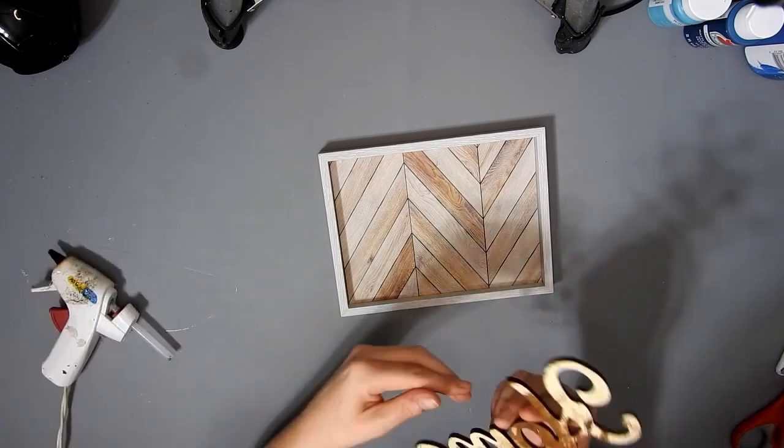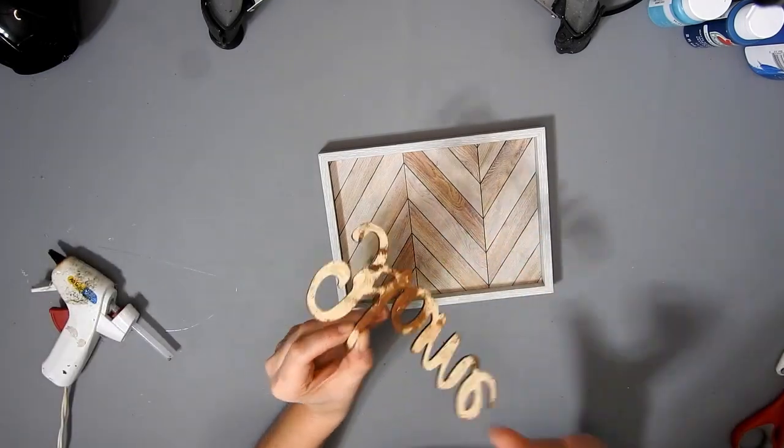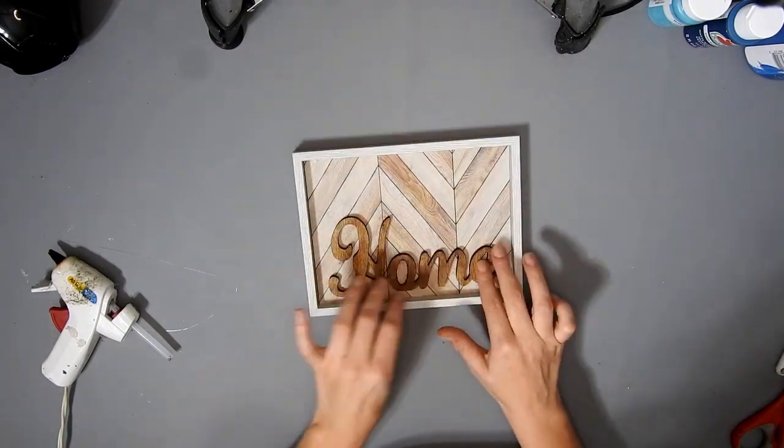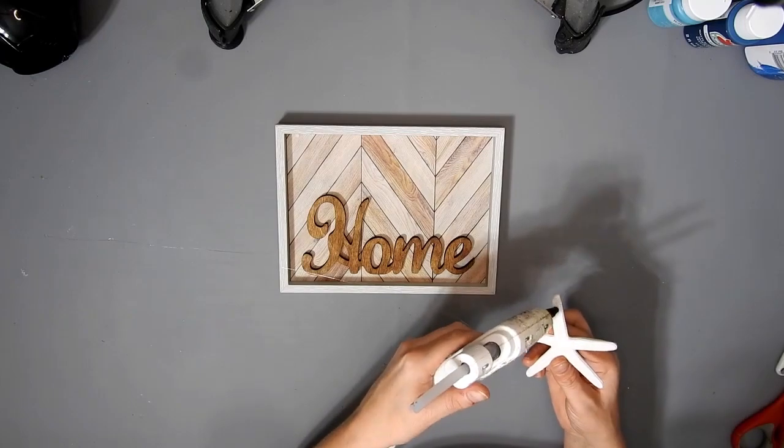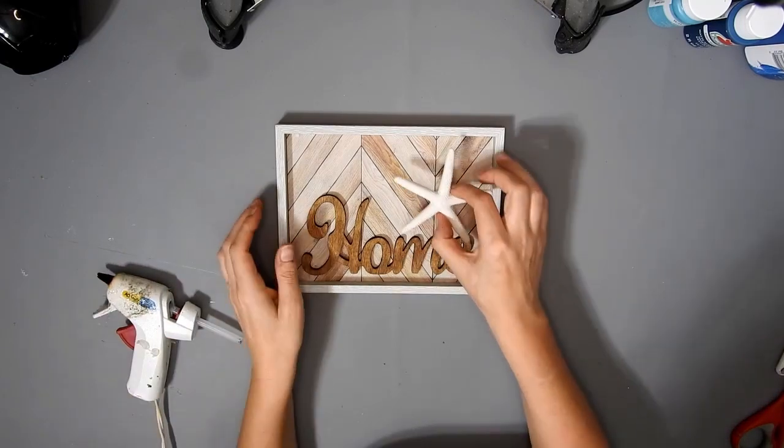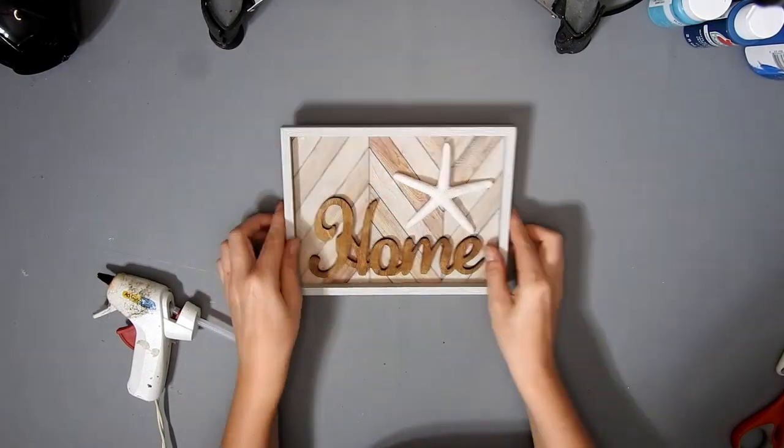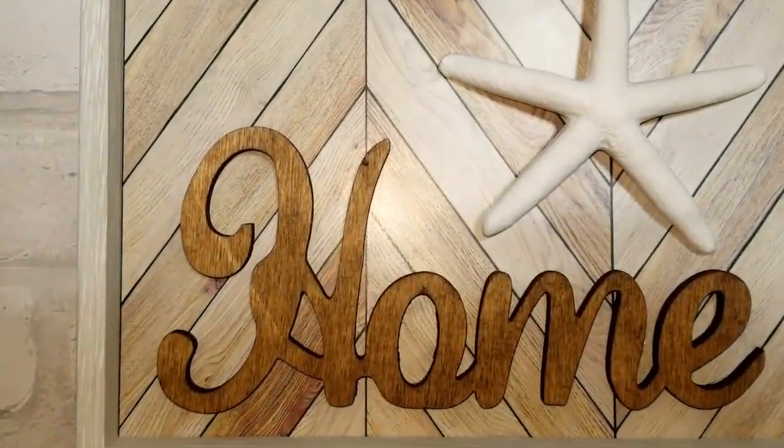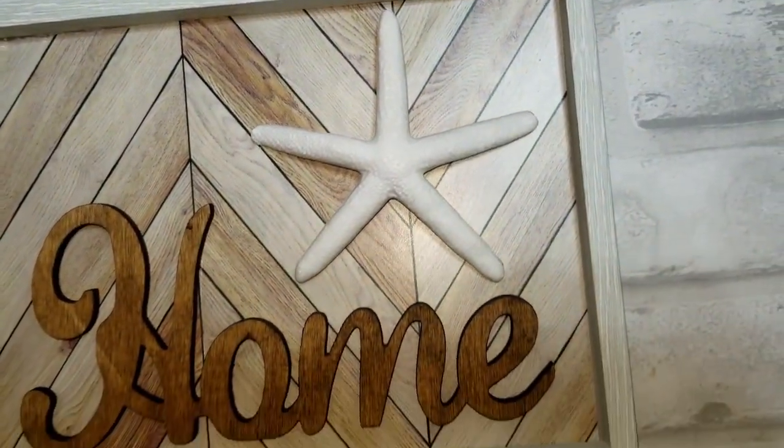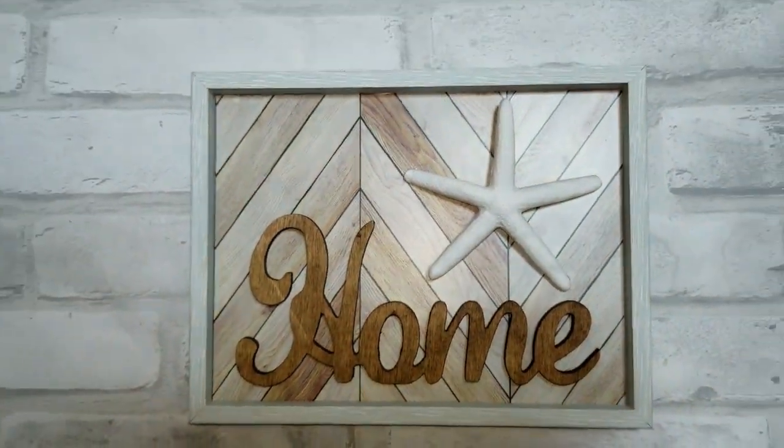I also stained this home sign with some Waverly Antique Wax, but I didn't realize the camera had stopped rolling. Then I used the last starfish because it's a pack of three, and I just stuck that on with some hot glue. I think this turned out really cute. It was so easy and simple to do.